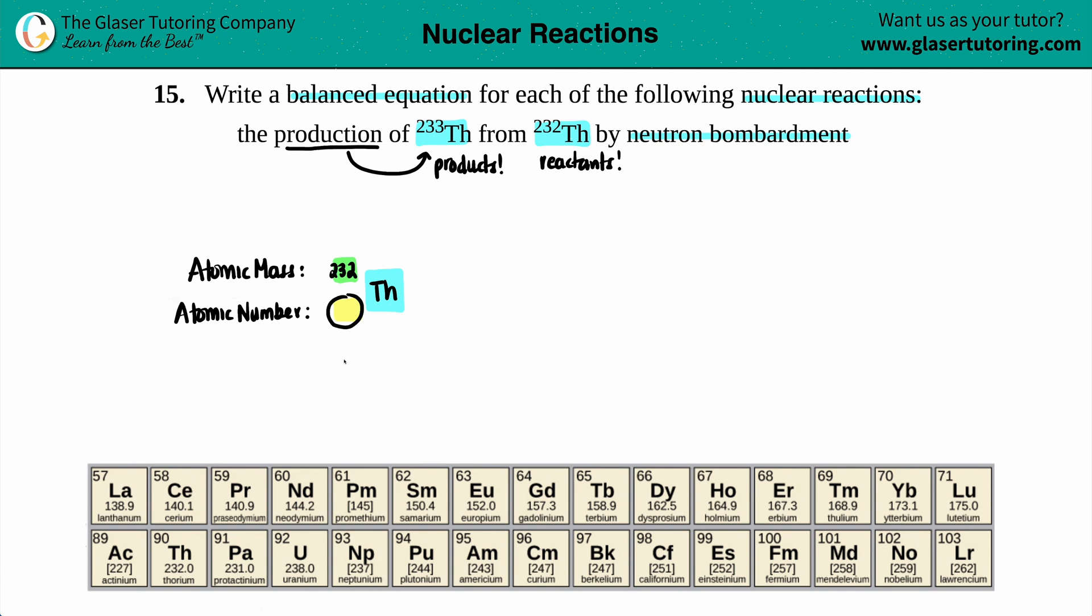They didn't give us an atomic number, but that's why we have to go on the periodic table to find out where thorium is. Remember that every individual element has its own unique atomic number. I only pulled up this little sliver of the periodic table. Here's thorium right here. Thorium is number 90. That is thorium's atomic number all the time.